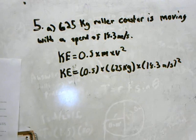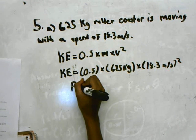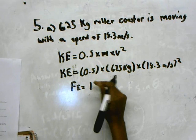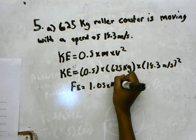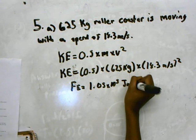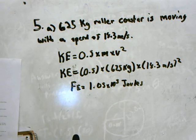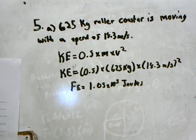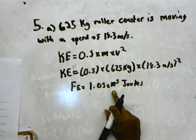That would equal 1.05 times 10 to the 5 joules. There you go. So when you're determining the kinetic energy of a 625 kg roller coaster car that is moving with a speed of 18.3 meters per second, it would be 1.05 times 10 to the fifth joules. That's the answer.